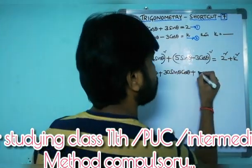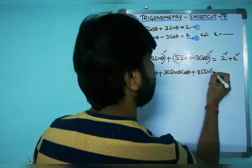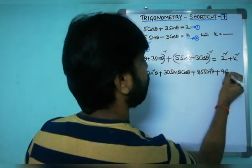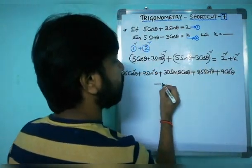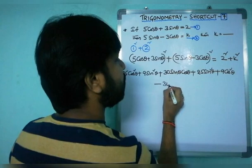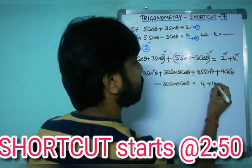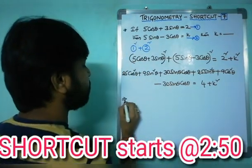Similarly, expanding (5 sin θ − 3 cos θ)² using the (a − b)² formula gives 25 sin²θ + 9 cos²θ − 30 sin θ cos θ. The right-hand side is 4 + k².